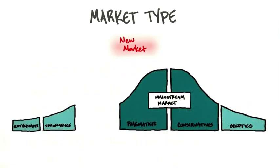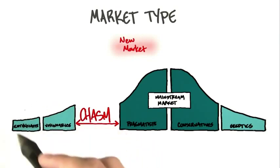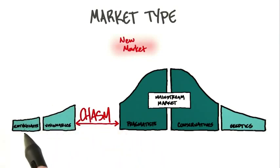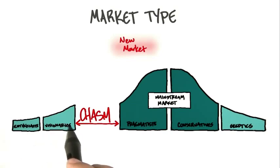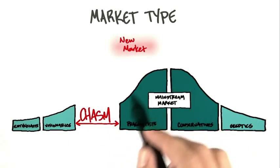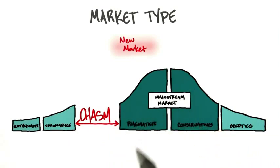A way to look at this is to take a look at the chasm. This is scary. You can sell to the crazy people all you want — the early evangelists, the early adopters — and that's nice, but you'll have a small business until you figure out how to get the masses to adopt. And here's what that hockey stick sales curve looks like.